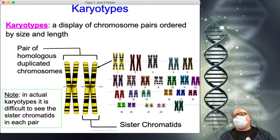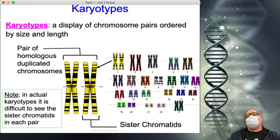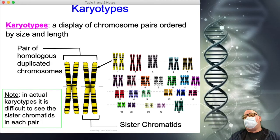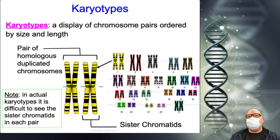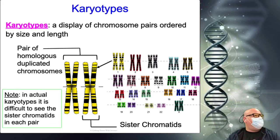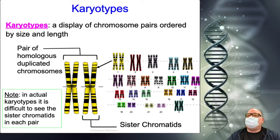A karyotype is a display — almost like a high school yearbook page where you line up all the pictures ordered by size and length. This is a cartoon version; real karyotypes can be very difficult to read and it can be hard to get the chromosomes neatly lined up.